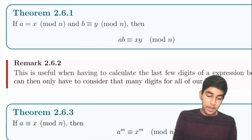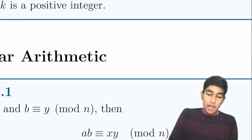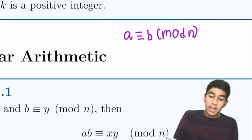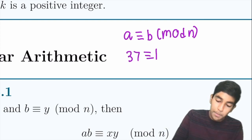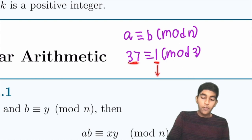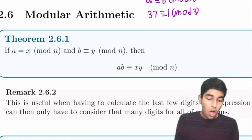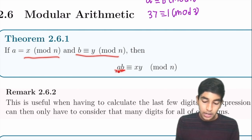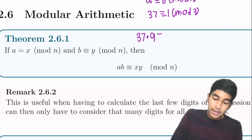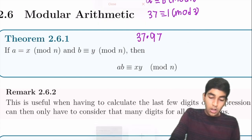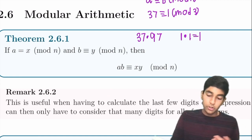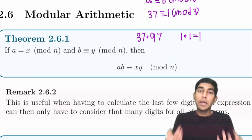Now modular arithmetic. A number A is congruent to B mod N if they leave the same remainder when divided by N. For example, 37 ≡ 1 (mod 3) because both leave remainder 1. If A ≡ x (mod N) and B ≡ y (mod N), then AB ≡ xy (mod N). This is useful for finding remainders — for example, the remainder when 37 × 97 is divided by 3 is just 1 × 1 = 1.